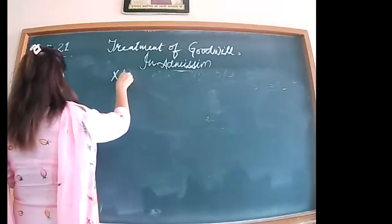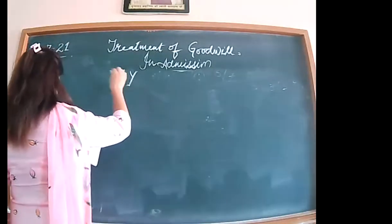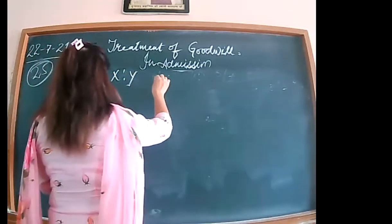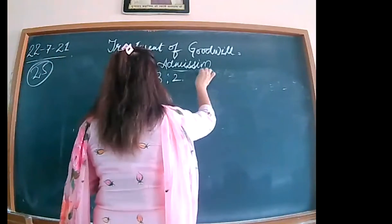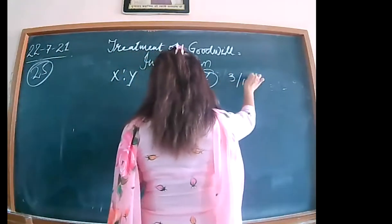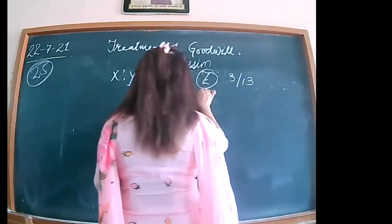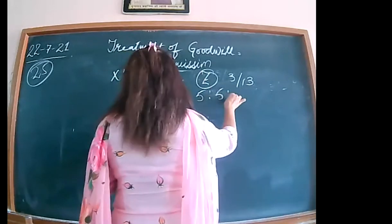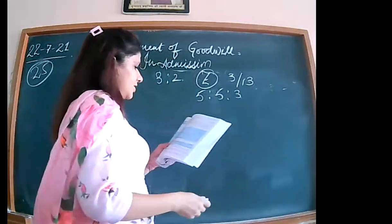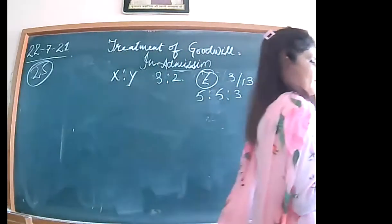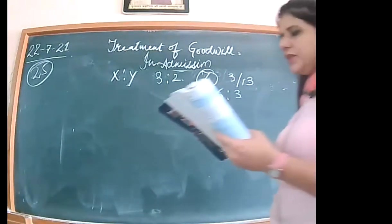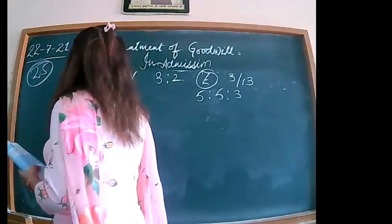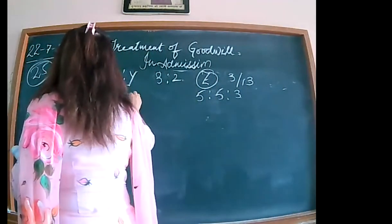Illustration 25: X and Y are partners in ratio 3 is to 2. Z has been admitted for 3/13 share, with the new share given. Z contributed the following assets towards his capital and premium for goodwill. The firm's goodwill is stated as 10,40,000. There will be a missing value here — this is the firm's goodwill being given.